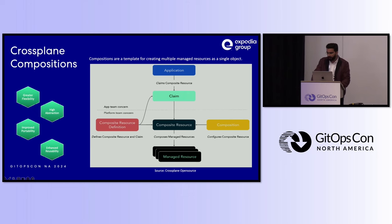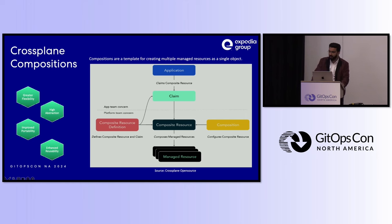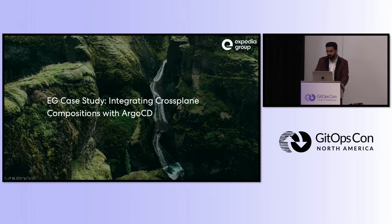A composition can include more than one managed resource — for example, spinning up a bucket requires a policy attachment, policy, and more, which generates friction in the developer experience. The app team's concern is just to provide the CrossPlane claim (XRC), and the rest is done by the platform team in an abstracted manner. The specific claim uses the relevant XRDs, and those resource definitions create the composite resource, which in turn creates the managed resources.